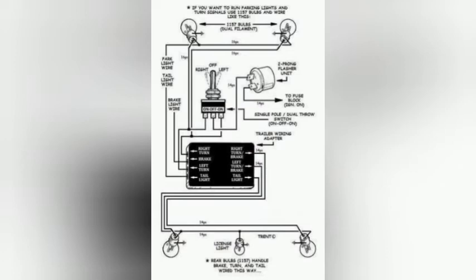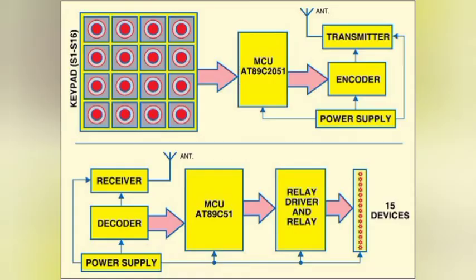A fax machine is a must for many businesses around the world. A fax machine basically scans a page to convert text and graphics into electronic signals and transmits them to another fax machine through a telephone line. The receiving machine converts the signals and uses a printer to create a copy of the message that was sent.